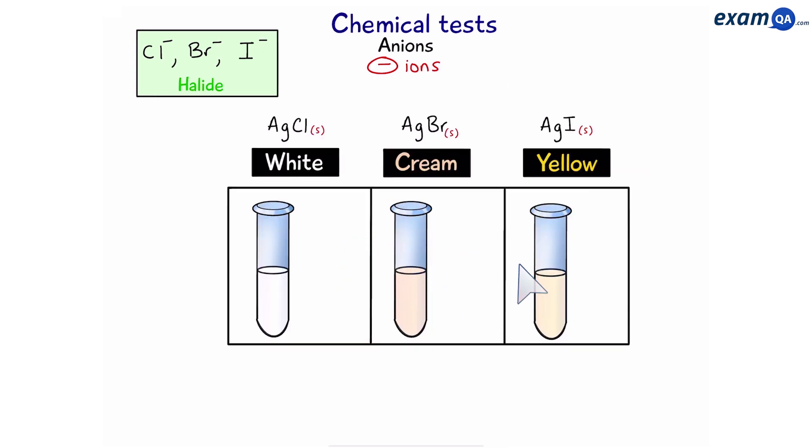Now the next part is not for GCSE however it's quite interesting to understand. When we do this experiment in a lab the white, cream and yellow precipitates can be quite hard to distinguish. So how do we make sure we've got the right ion? We add another chemical which will help us to make sure we know which ion is present.